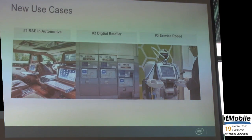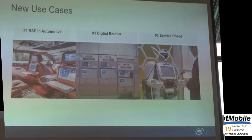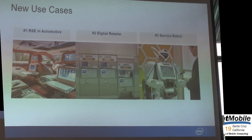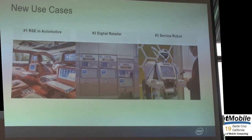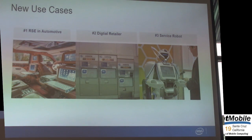Because of the rich application ecosystem, mobile OS such as Android has been applied to many emerging use cases. For example, Android-based devices have been installed to provide entertainment screens to all passengers in modern automotives. Also, many devices have been installed in retail stores for consumers to check out orders. Lastly, Android and ROS are working together for some service robots.